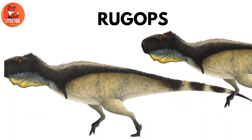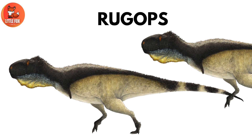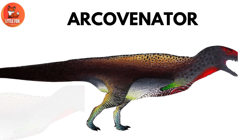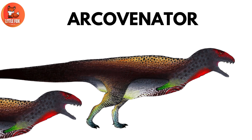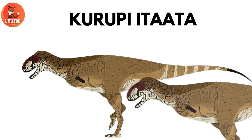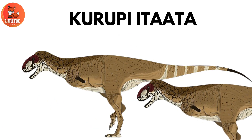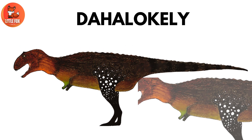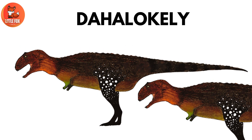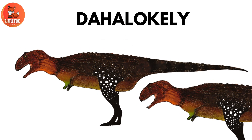Number 25: Rugops. Number 26: Arcovenator. Number 27: Hurapayatata. Number 28: Dahalokli.